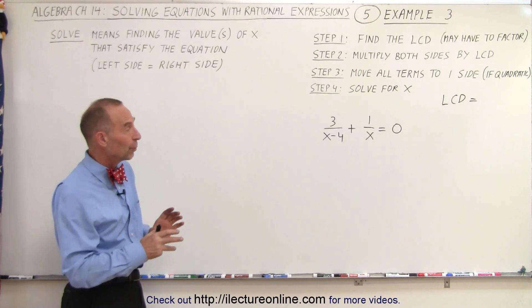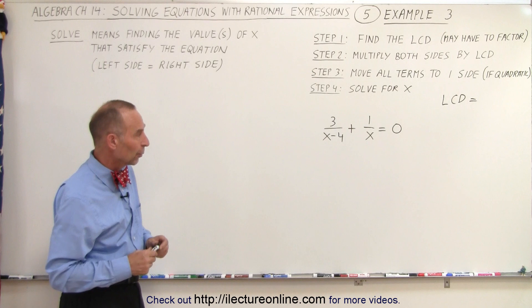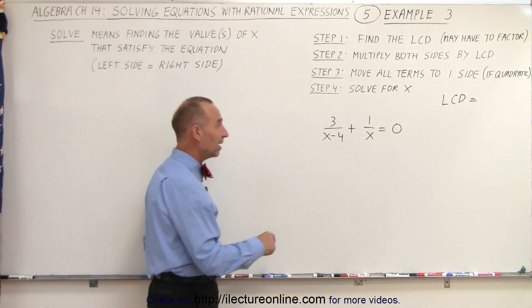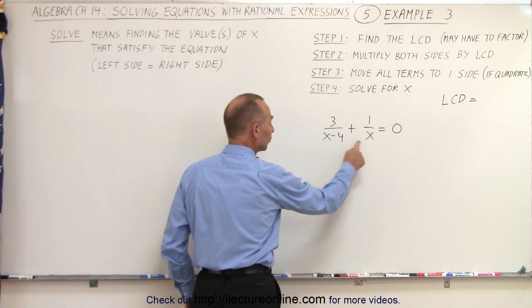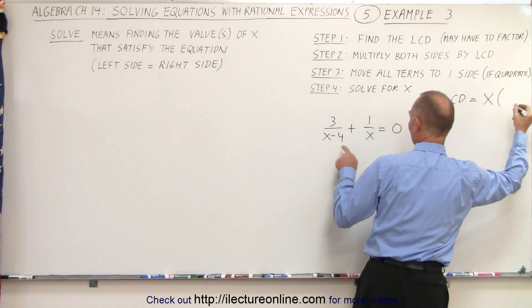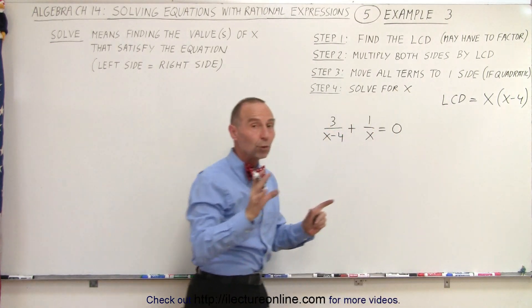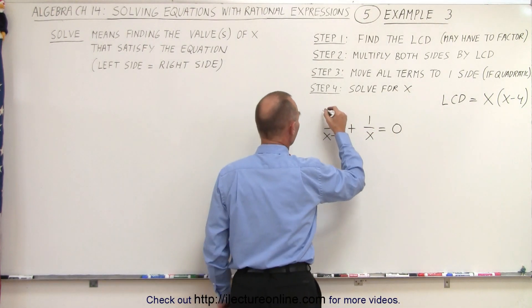The same way as before, we're going to find the lowest common denominator and multiply both sides by the lowest common denominator. In this case, that's going to be the product of the two denominators, so the LCD becomes x times x minus 4, which means we're going to multiply both sides of the equation by x times x minus 4.